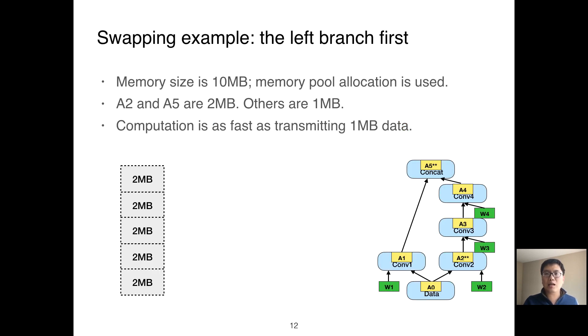We use an example to illustrate this key observation. This dataflow graph shows part of the forward propagation of a toy network. We assume there is only 10 megabytes memory and we use memory pool allocation. All tensors in this dataflow graph, including parameter tensors and activation tensors, are 1 megabyte except for A2 and A5, which are 2 megabytes. For simplicity, we assume computation is as fast as transmitting 1 megabyte data. In this example, the memory pool allocates five 2-megabyte memory objects.